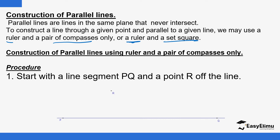Construction of parallel lines using a ruler and a pair of compasses only — the procedure is as follows. First, start with a line segment. Most of the time you are given the line segment — PQ, AB, XY, or any other name. You want to construct a line through point R, a line passing through R and parallel to the given line PQ. The point R is not on the line.